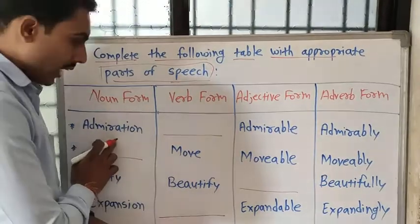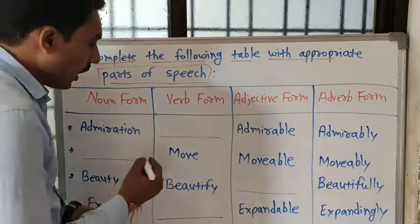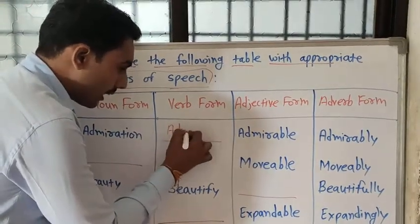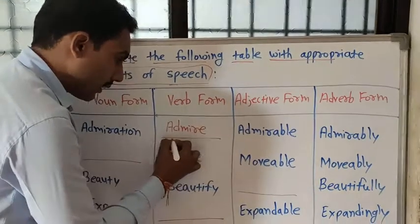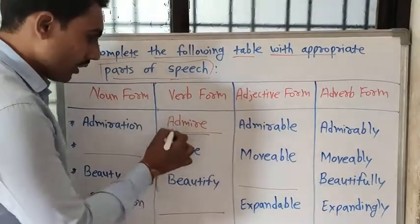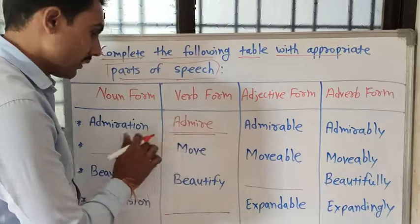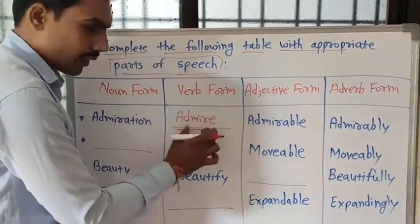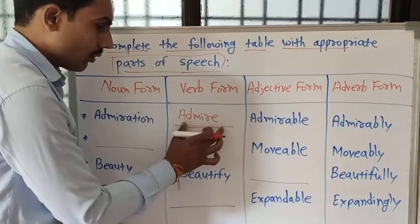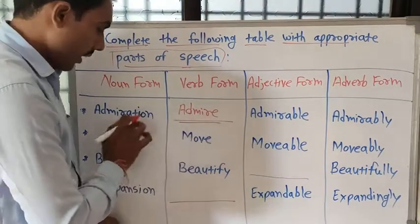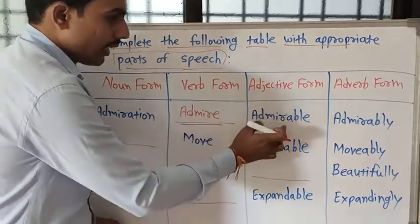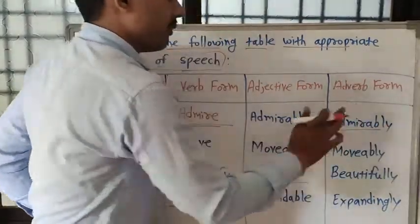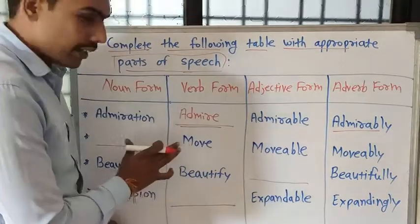Admiration — the verb form is 'admire', spelled A-D-M-I-R-E. You can easily complete the verb form of 'admiration' in this blank. So: admiration, admire, admirable, and admirably — that is the adverb form.